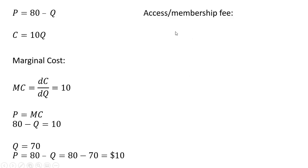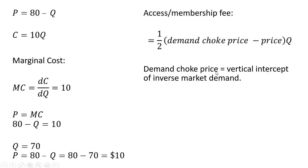The access or membership fee will be given by the following formula. It'll equal one-half multiplied by the demand choke price minus the price multiplied by the quantity. The demand choke price is nothing more than the vertical intercept on the inverse market demand. So we get this price equation, get the vertical intercept which will be 80. That's what's going to be the demand choke price.